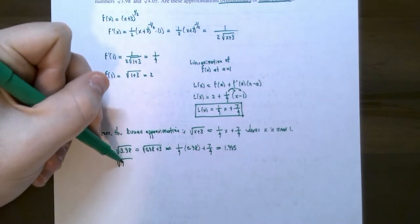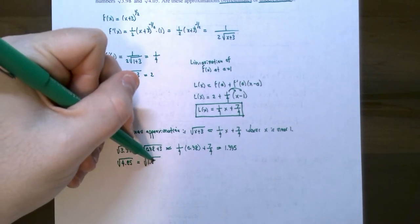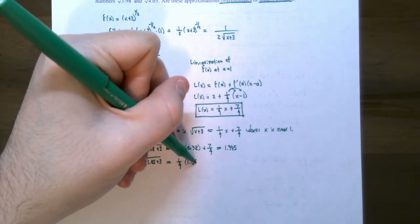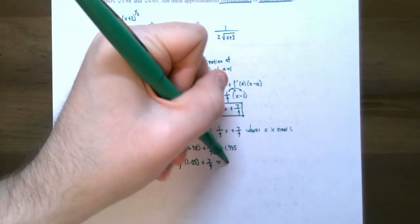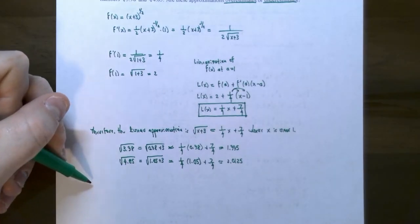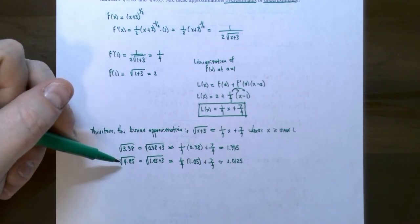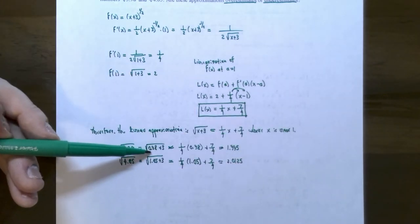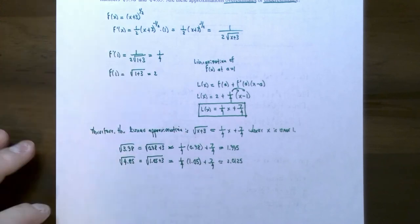Now let's calculate the square root of 4.05. The x value is 1.05, so the approximation is one fourth times 1.05 plus seven fourths, which is approximately 2.0125. So we have approximations for the square root of 3.98 and the square root of 4.05. Using the approximations when x is close to one — 0.98 is close to one, 1.05 is close to one as well — these approximations are going to be fairly accurate.